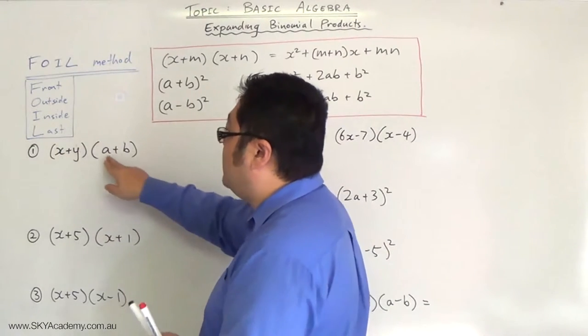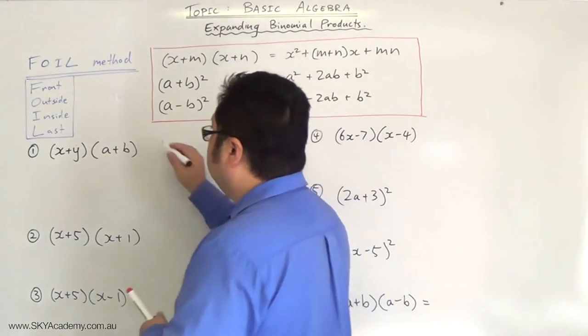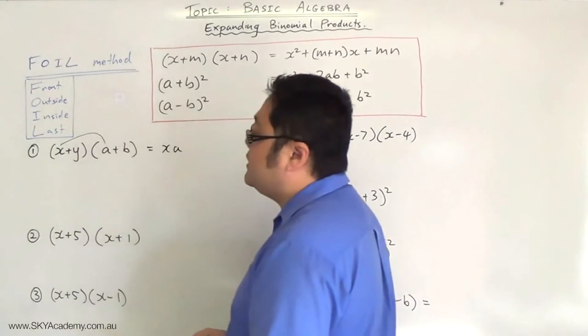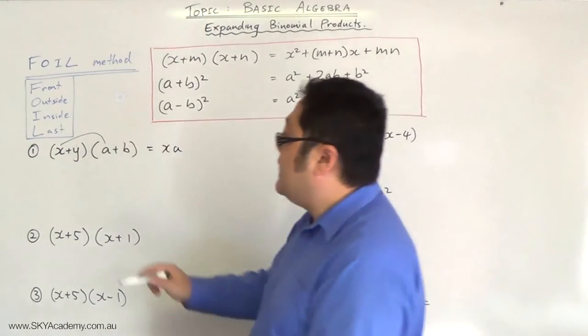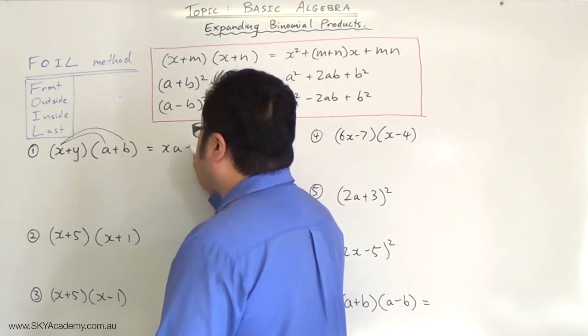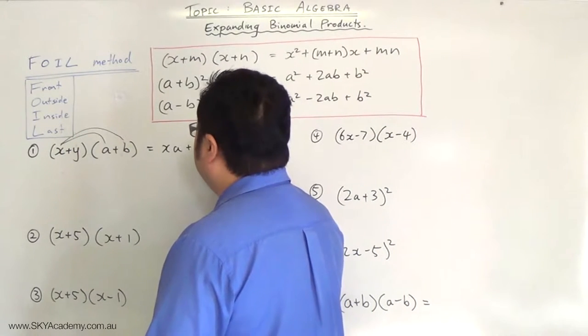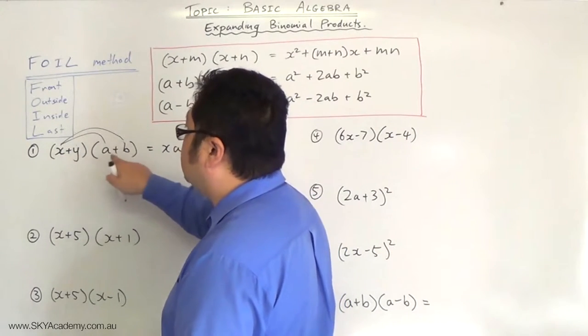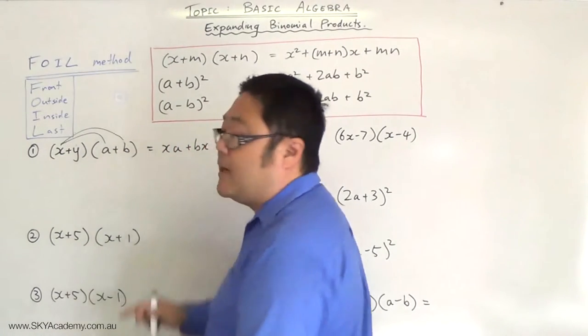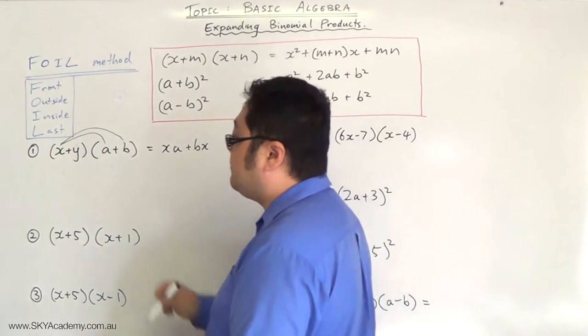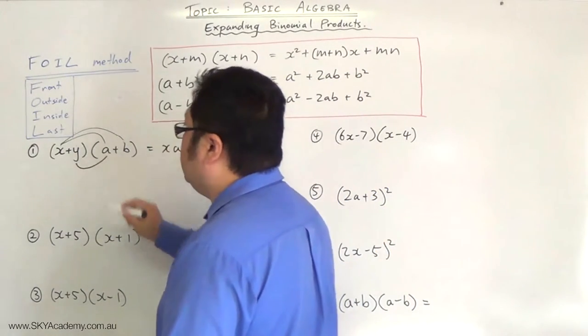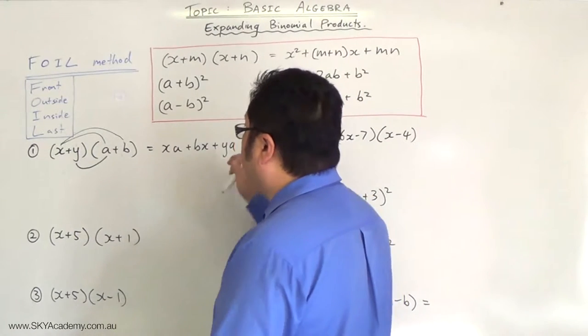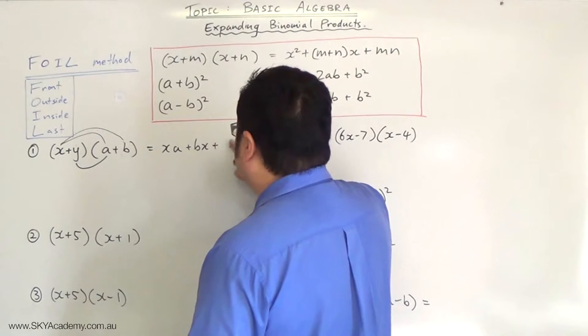So the front two, x times a, gives you xa. So we've done the front two. Let's do the outside two. x times b is xb, and because this is a plus and this is a plus, it becomes plus xb. You multiply by the inside two, so you add ya, or ay. It's probably better if we write it as ay.